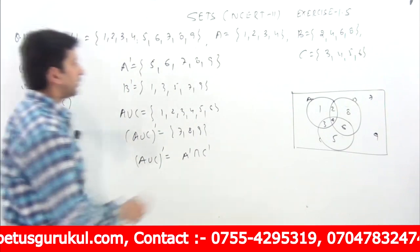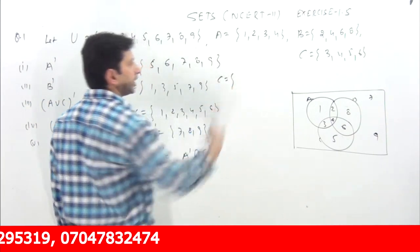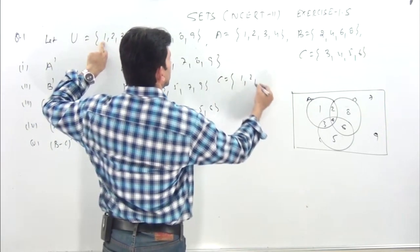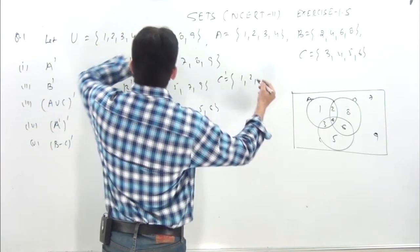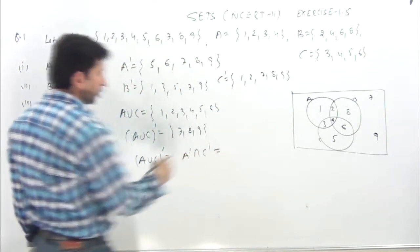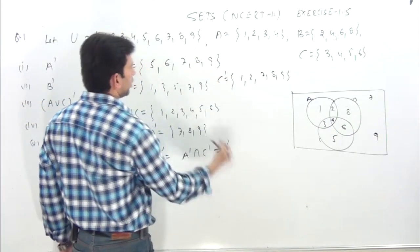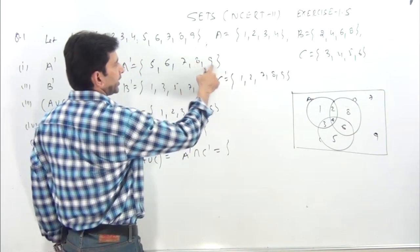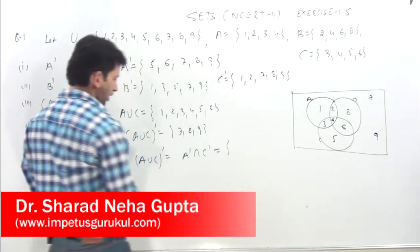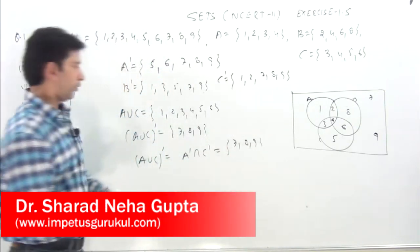Ek tarika aur tha: De Morgan's law se — A complement intersection C complement. C ka complement kya hoga: {1, 2, 7, 8, 9}. A complement intersection C complement: in dono mein common kya hoga — {7, 8, 9}. 7, 8, 9 common hai — proved also.